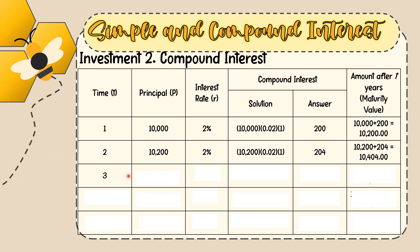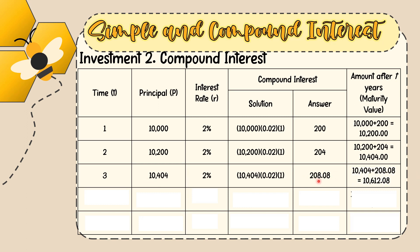For year 3 of compound interest, the new principal is the previous maturity value of 10,404. With the same 2% interest rate: 10,404 × 0.02 × 1 = 208.08. So the maturity value after year 3 is 10,404 + 208.08 = 10,612.08 pesos.